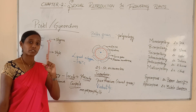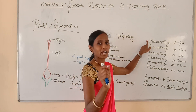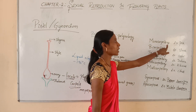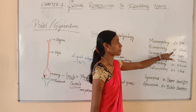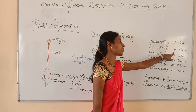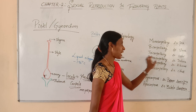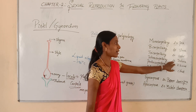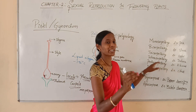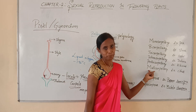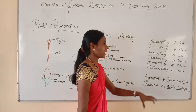If a gynoecium consists of a single carpel, it is called monocarpellary — example: pea. Bicarpellary means two carpels — example: Vinca (Catharanthus roseus). Tricarpellary means three carpels — example: castor. Tetracarpellary means four carpels — example: Datura. Pentacarpellary means five carpels — example: Hibiscus. Multicarpellary refers to many carpels — example: citrus.